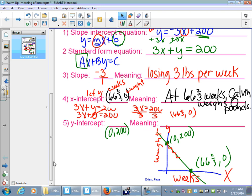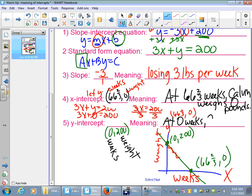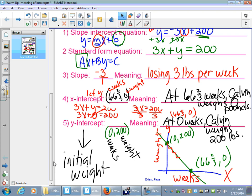Let's do the same thing with our y-intercept. Our y-intercept was 0, 200. Again, 0 is our weeks, and 200 is our weight. So what does that mean? That means that at 0 weeks, Calvin weighs 200 pounds. Now, maybe an easier way to say that would be that that is his initial weight or starting weight before he started losing the 3 pounds per week. That's kind of saying the same thing there.